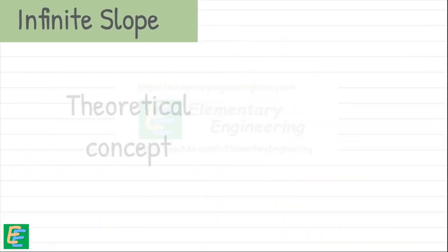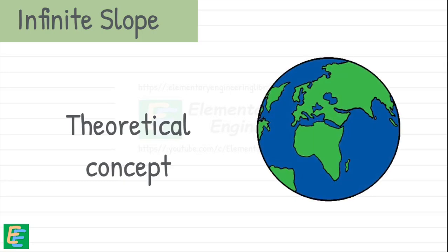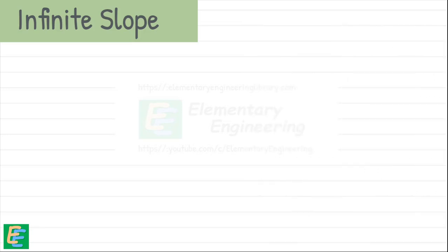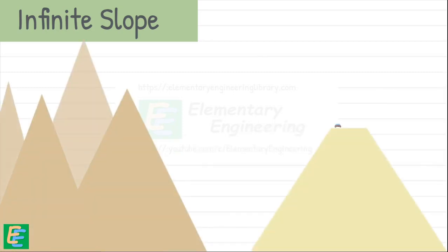Infinite is only a theoretical concept. In the real world, which itself is finite, nothing is truly infinite. But in geotechnical engineering, we use the idea of an infinite slope to make our calculations easier. In practice, this means the slope is super long and consistent compared to the depth of the soil layer. Think of natural hillsides or massive embankments where the slope stretches way farther than the depth of the soil.